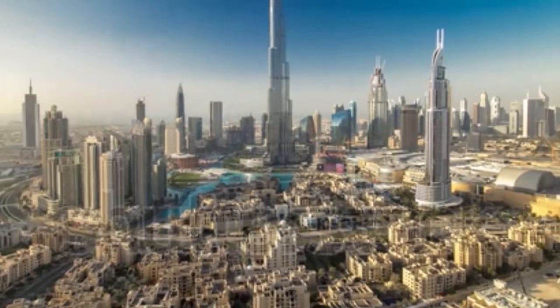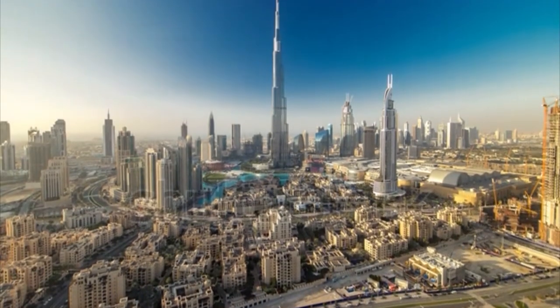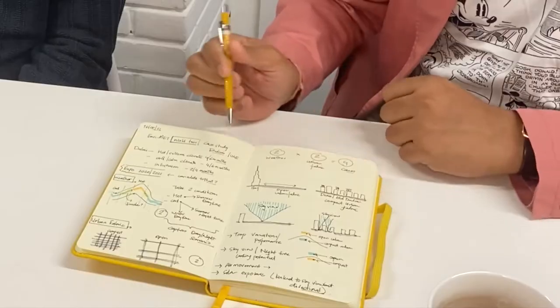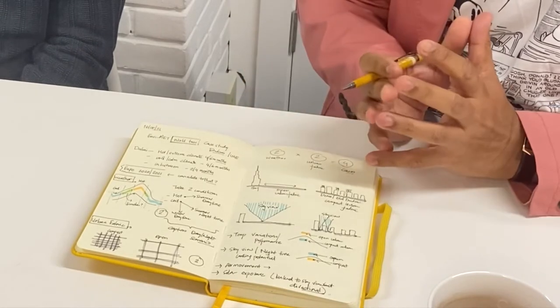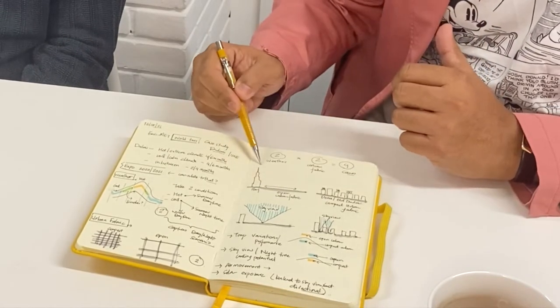I think our first discussion, it sort of quickly jumped us to Dubai. There are two distinct places for this case study. So one is the Dera, which is like the old part of Dubai, and the other one is the area next to the Burj.